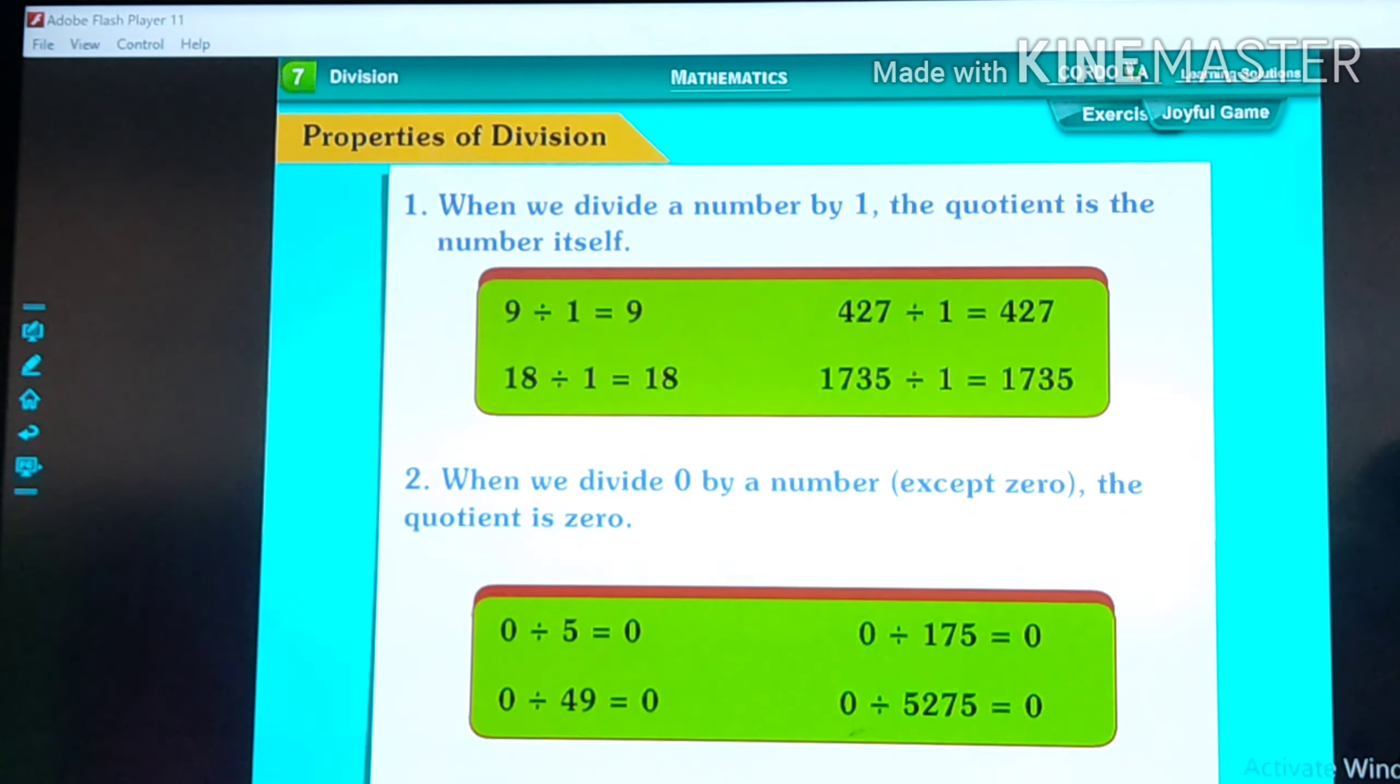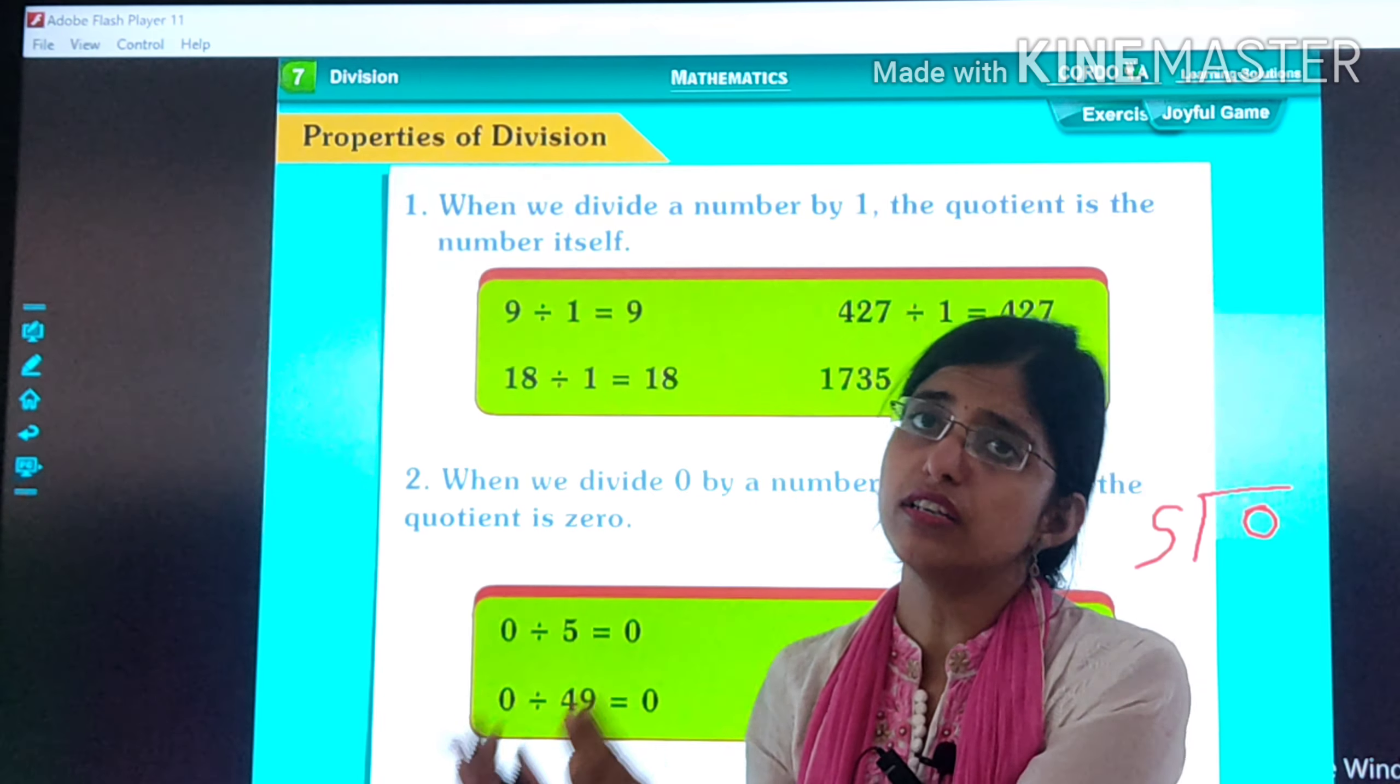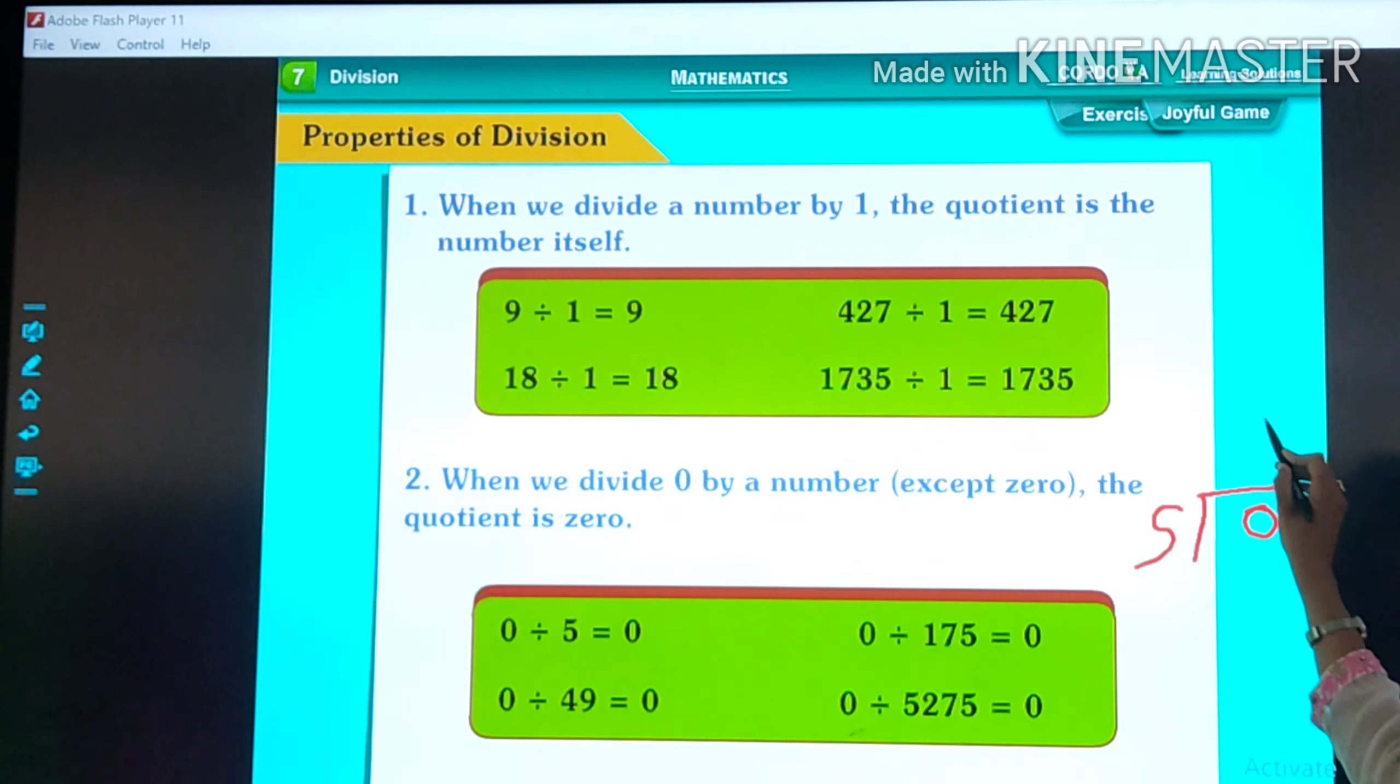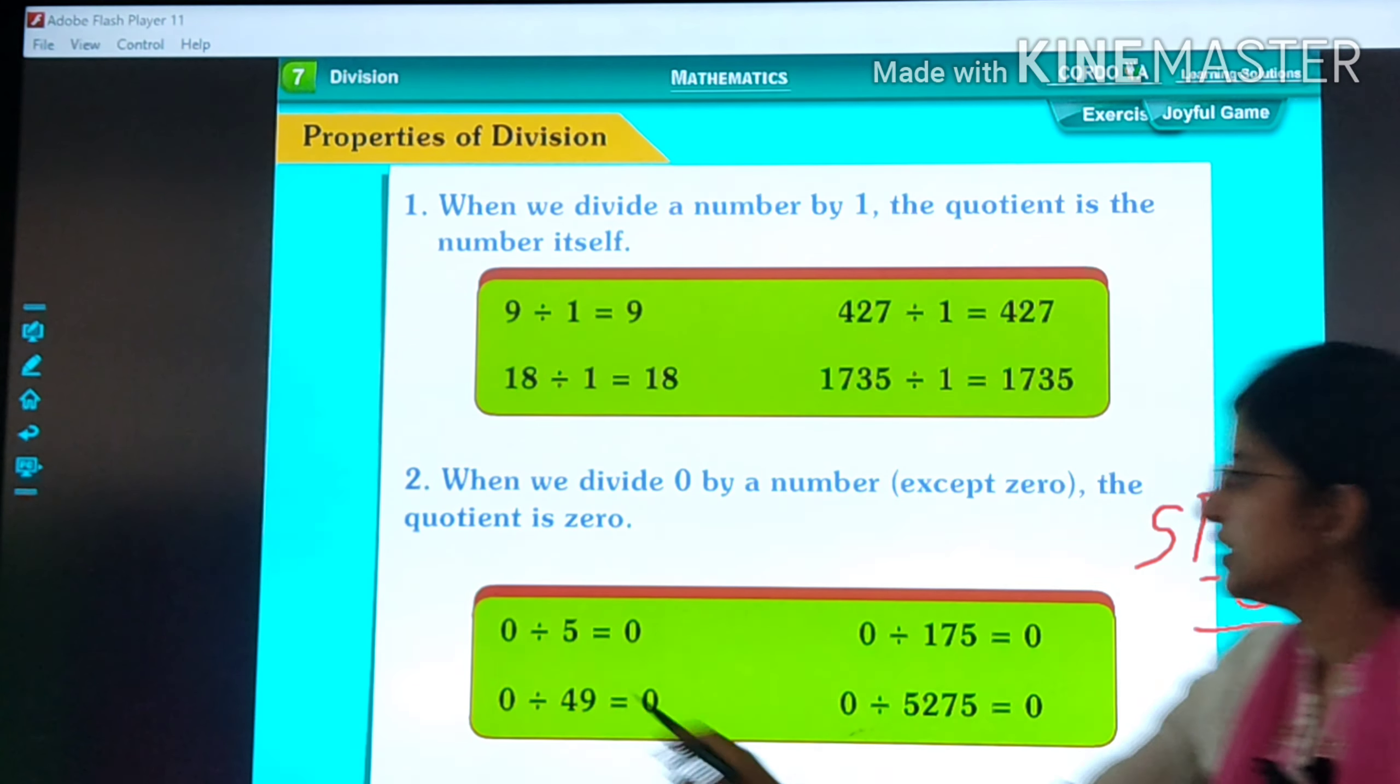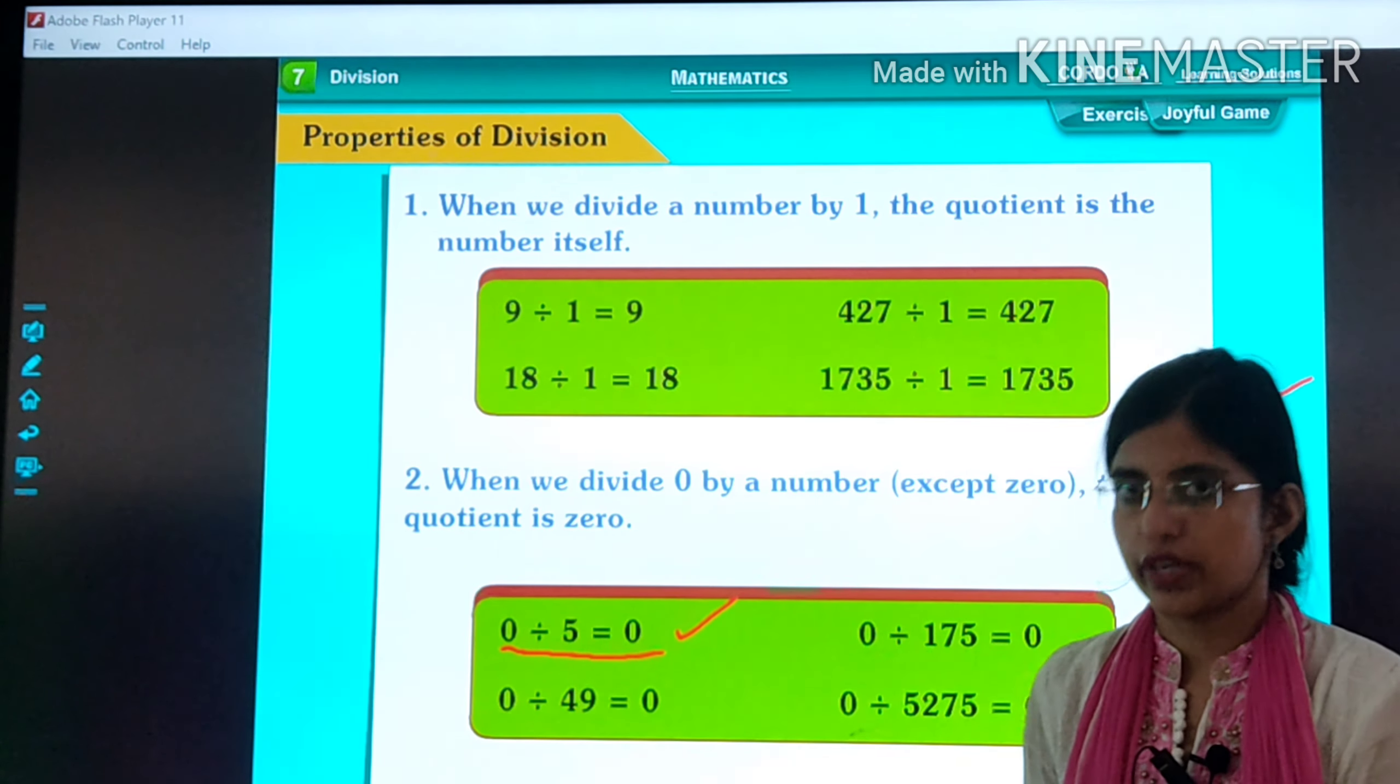See, 0 divided by 5. In the table of 5, where does zero come? 5 zeros are 0. So 5 zeros are 0. So our answer here is 0. That's why 0 divided by 5 is 0.